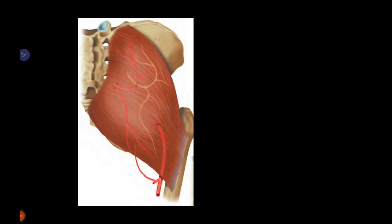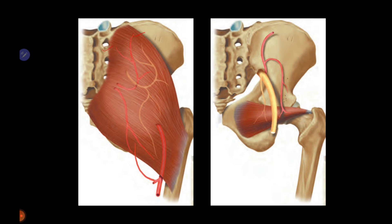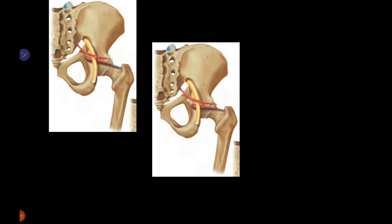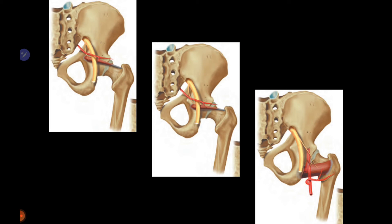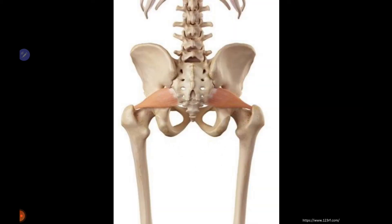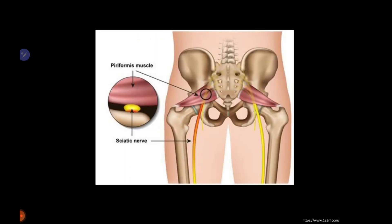The six posterior quadrant muscles: gluteus maximus arises from the sacrum and iliac bone, inserting over the femur and iliotibial band. Obturator internus arises from the internal border of the obturator foramen and inserts over the inner aspect of the greater trochanter. Superior and inferior gemelli and quadratus femoris are also included. Piriformis is a very important muscle as it fills the greater sciatic notch and is closely related to the sciatic nerve, so any abnormality or inflammation can cause compression and sciatic nerve symptoms.